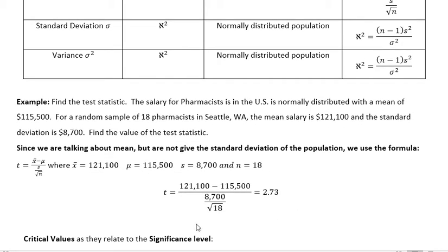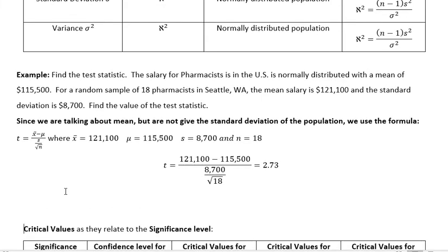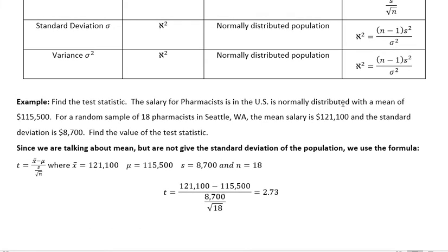Here's an example. Find the test statistic. And so what they're saying is the salary for pharmacists in the U.S. is normally distributed with a mean of $115,500. Notice we're always talking about normally distributed populations here. For a random sample of 18 pharmacists in Seattle, Washington, the mean salary is $121,100, and the standard deviation is $8,700. Find the value of the test statistic.